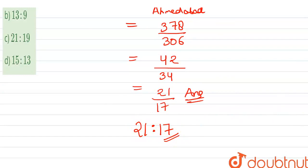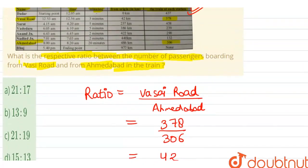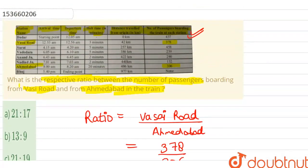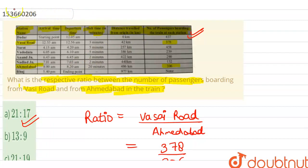And this will be the required answer. Let us see which option is correct — yes, option A is correct, that is 21 ratio 17, which is the correct answer to this question. I hope the question is clear. Thank you guys, thanks for watching.